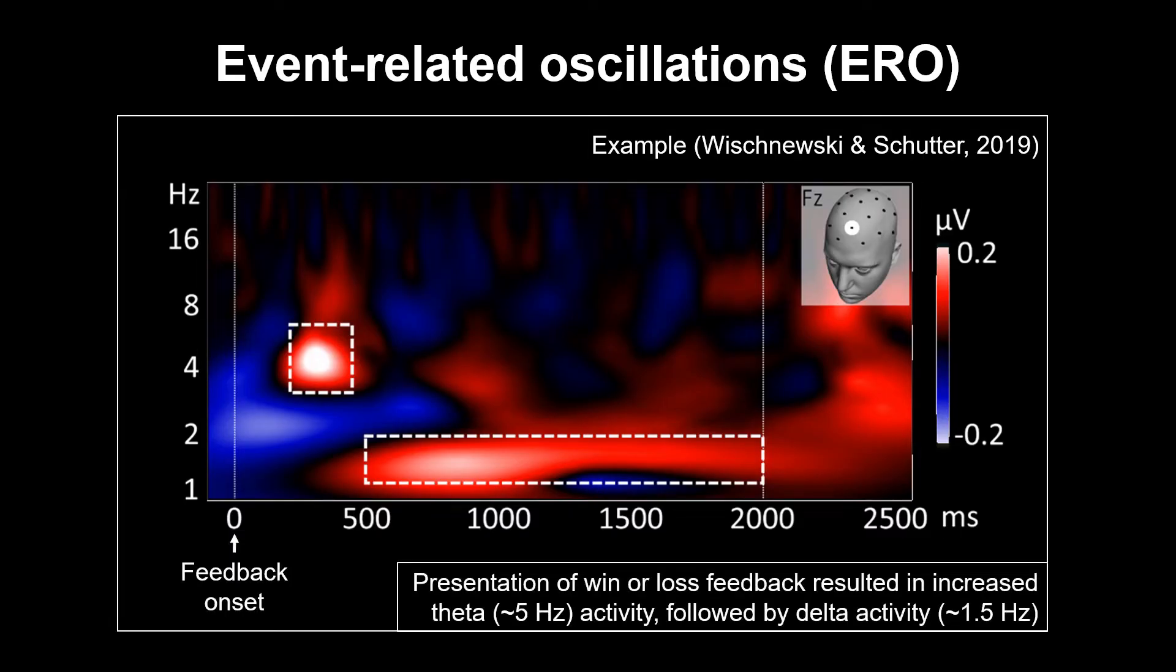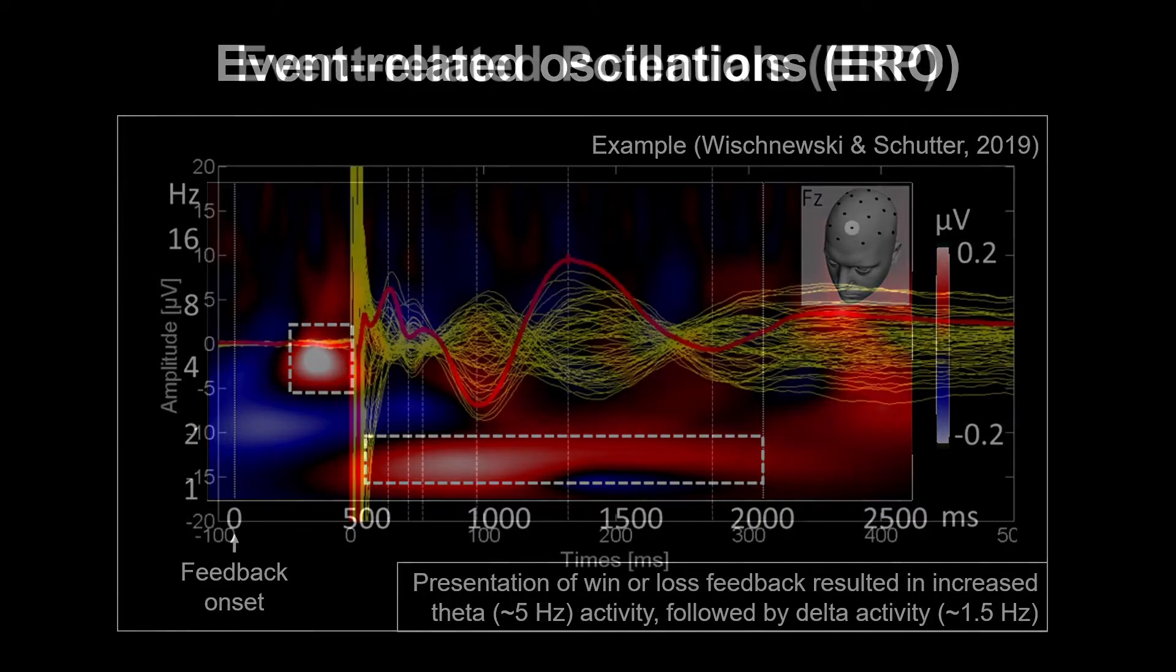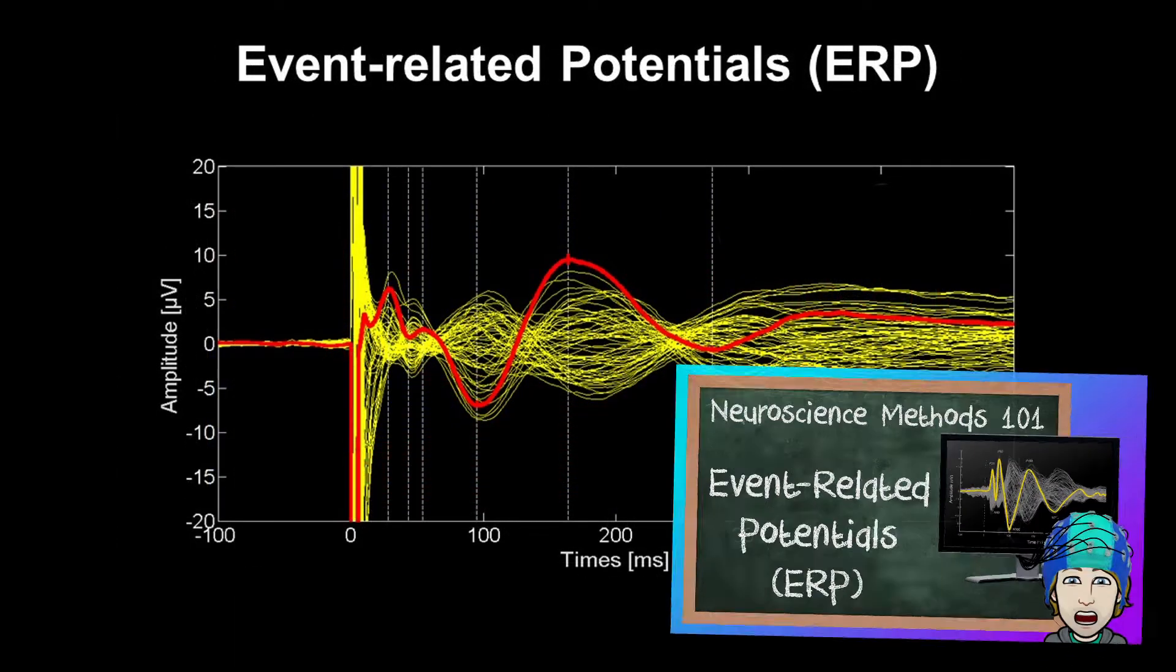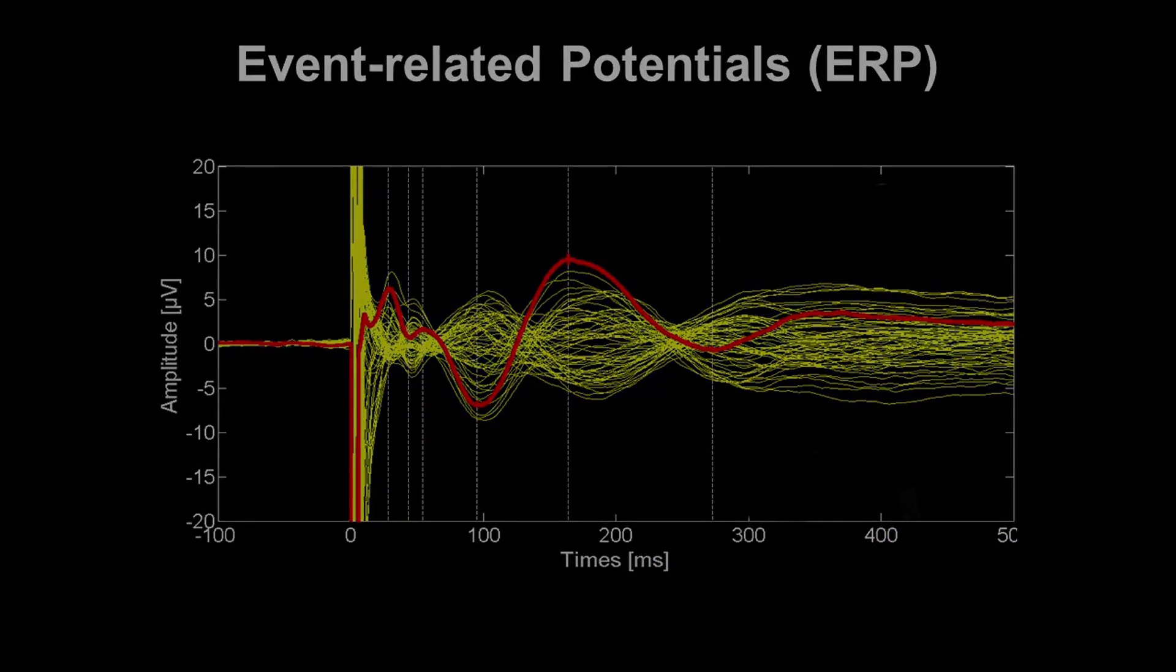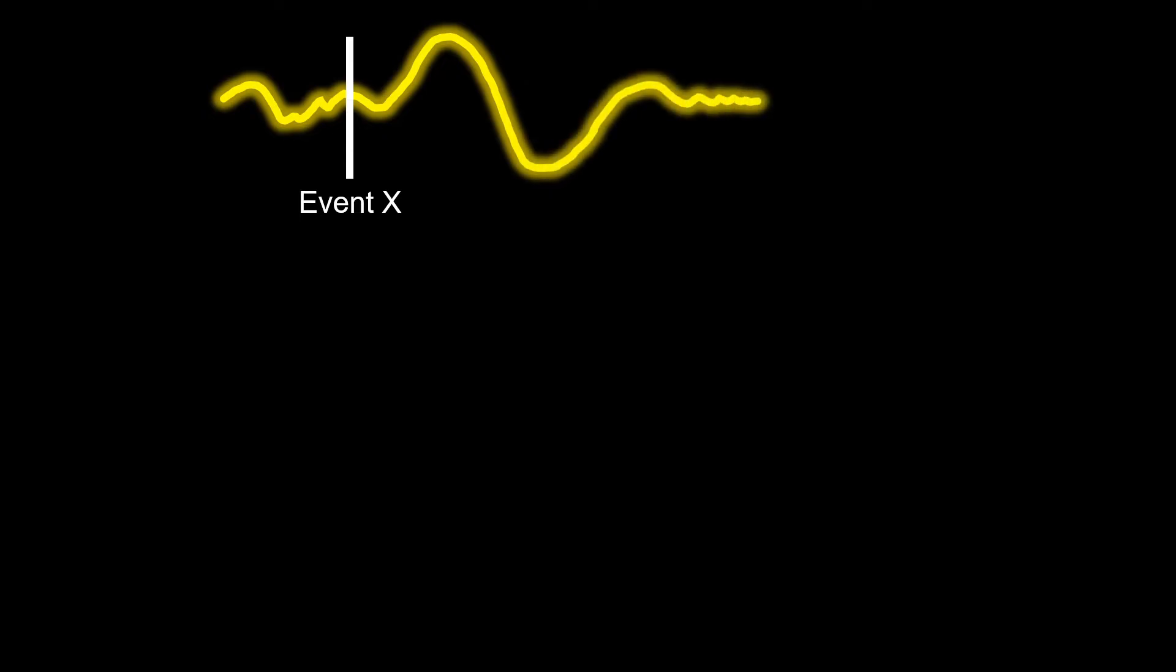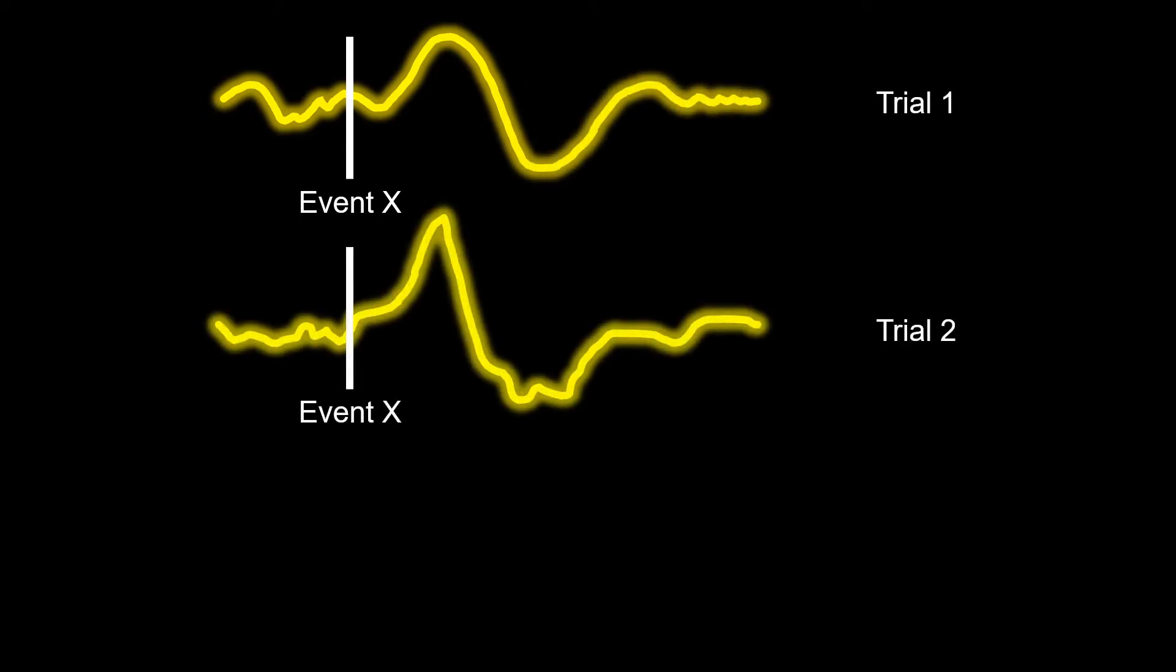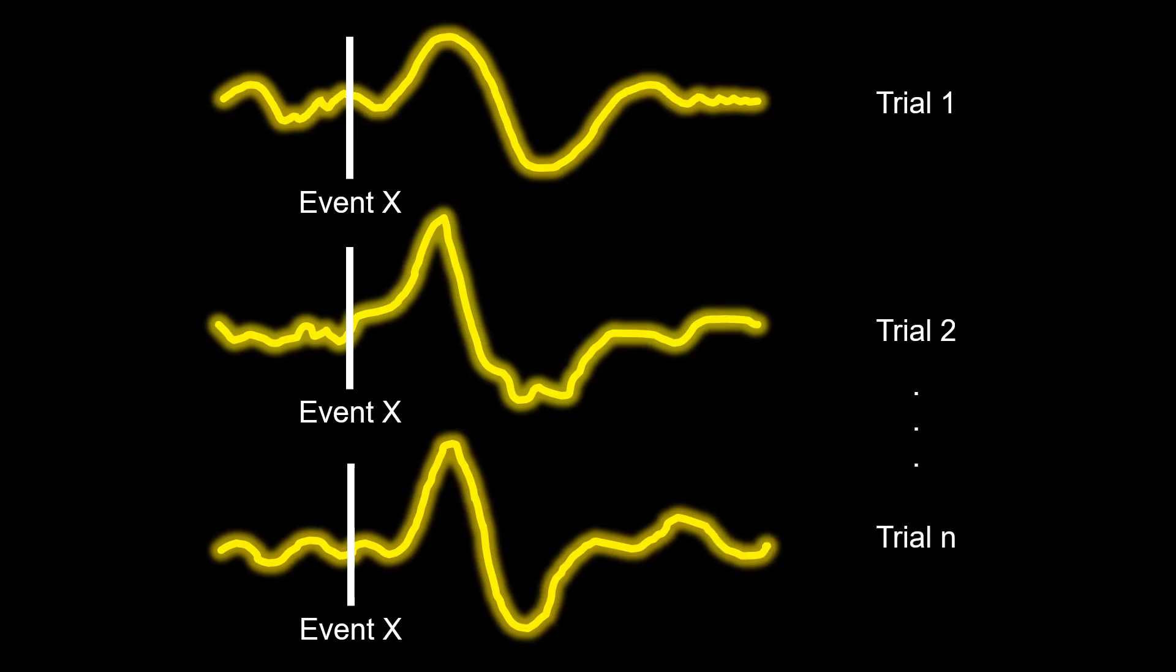And this might sound familiar, because in a previous video we discussed event-related potentials, or ERPs. As a short summary, ERPs are the EEG or MEG signal in response to an event. Typically, this is done by repeating this event over many trials, and then averaging the corresponding signal, let's say up to one second after the event.